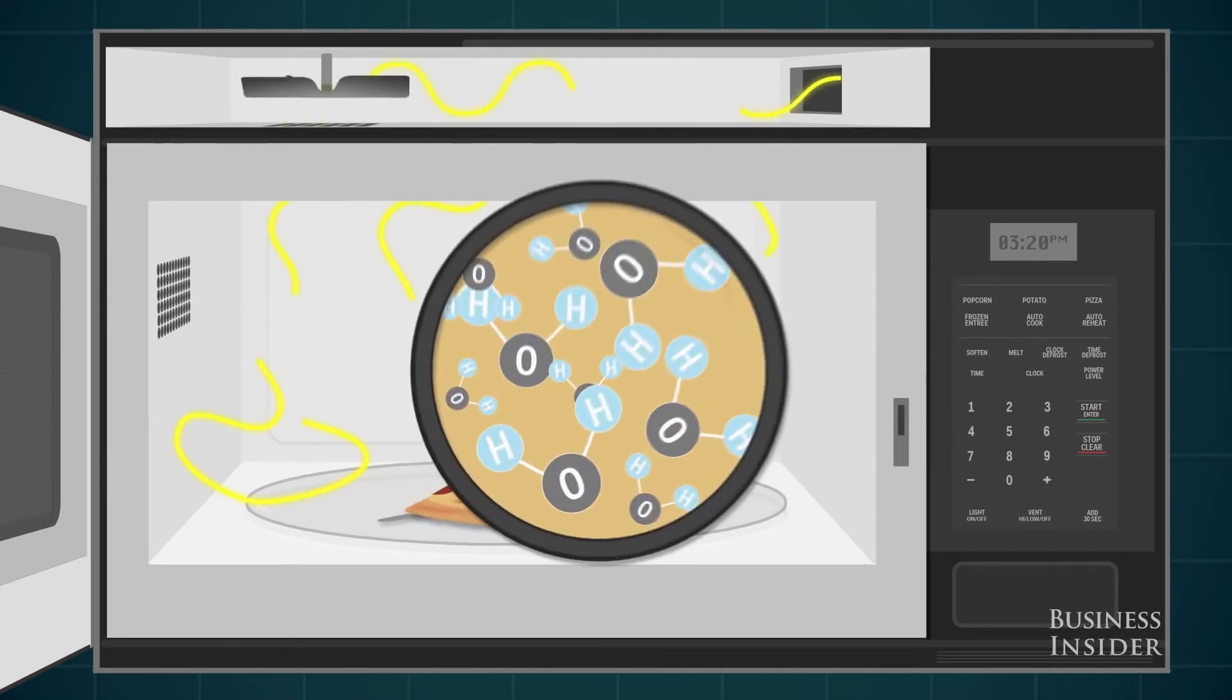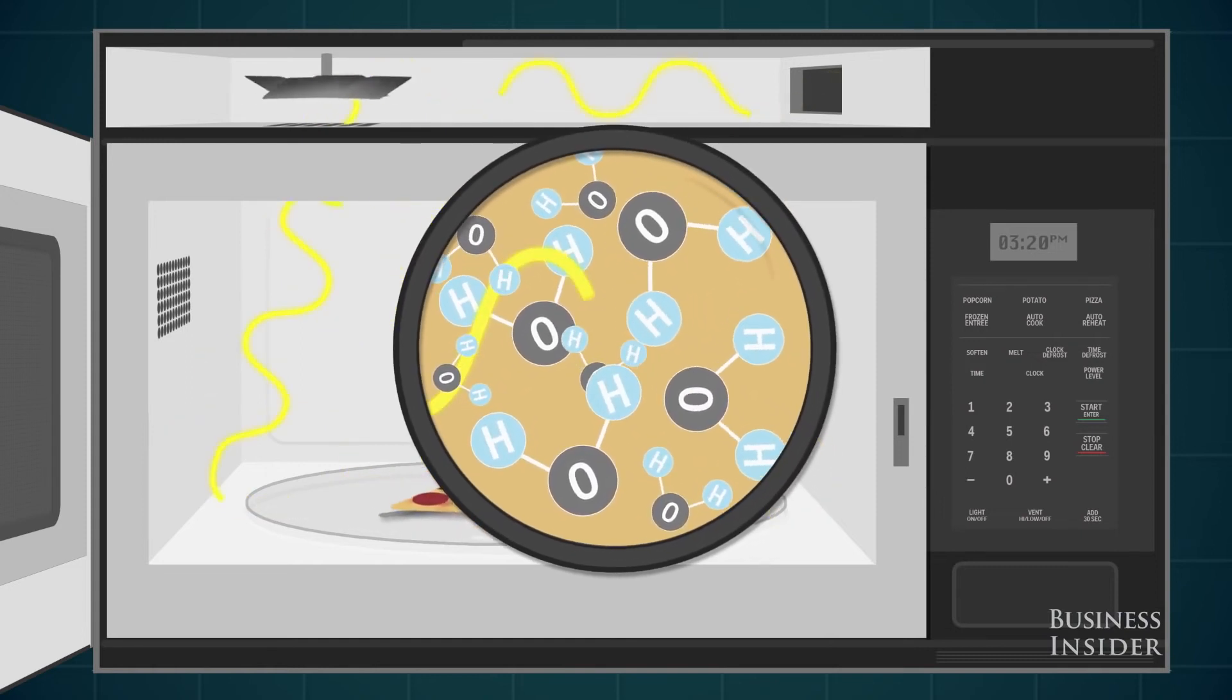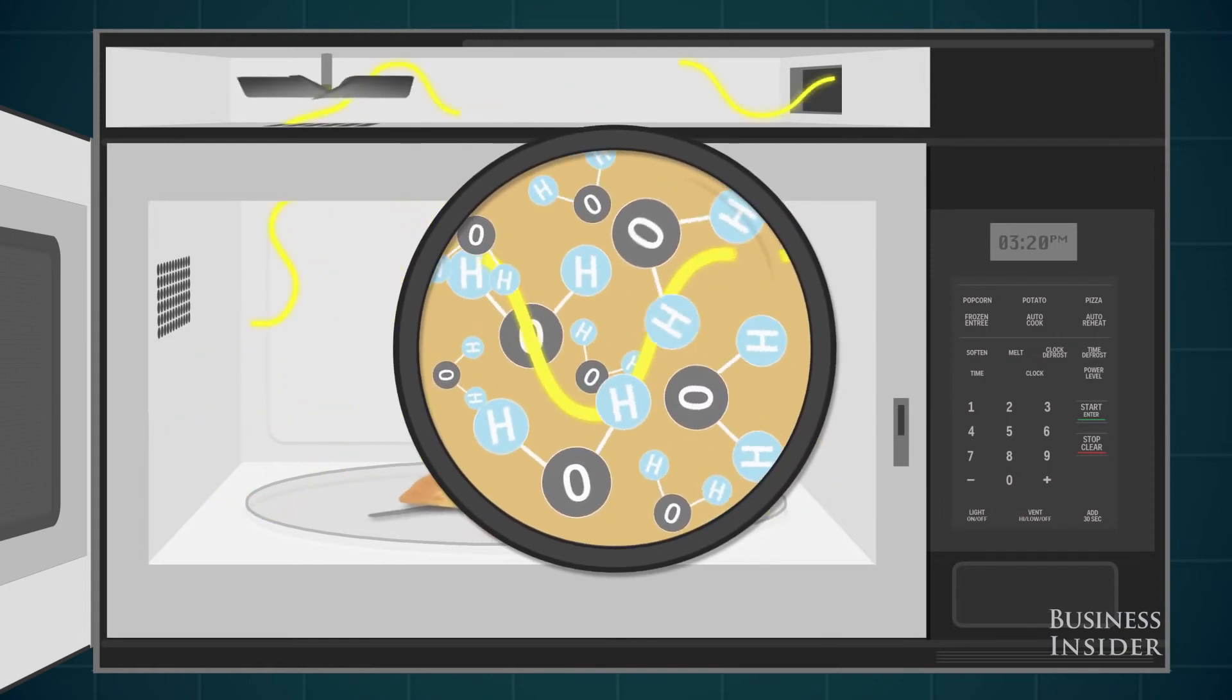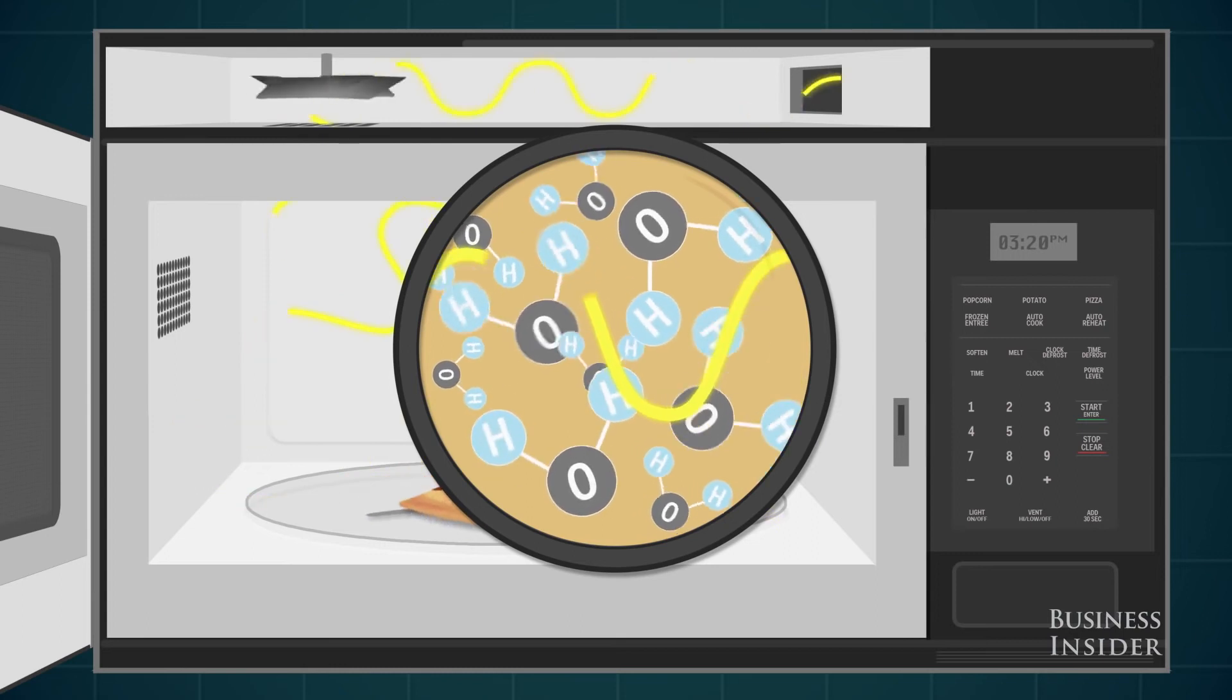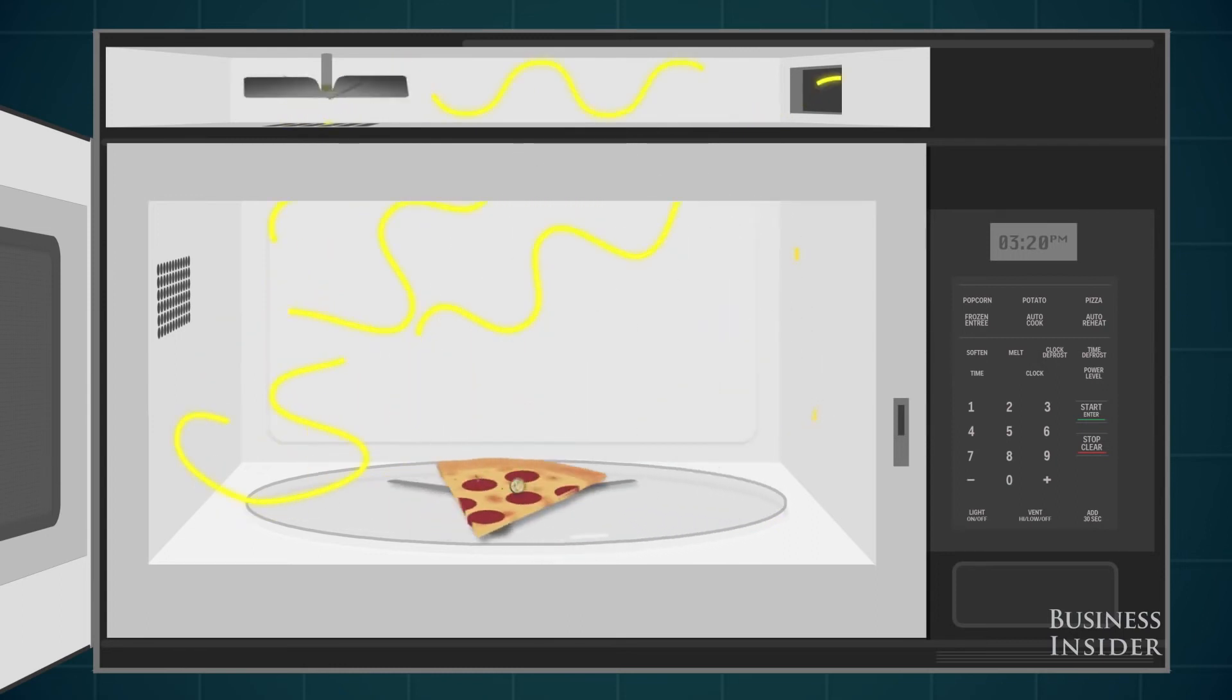The radio waves heat the water inside food by pushing the tiny pieces water is made of to make them go faster. As the pieces move faster, they get hotter, which makes the food warmer.